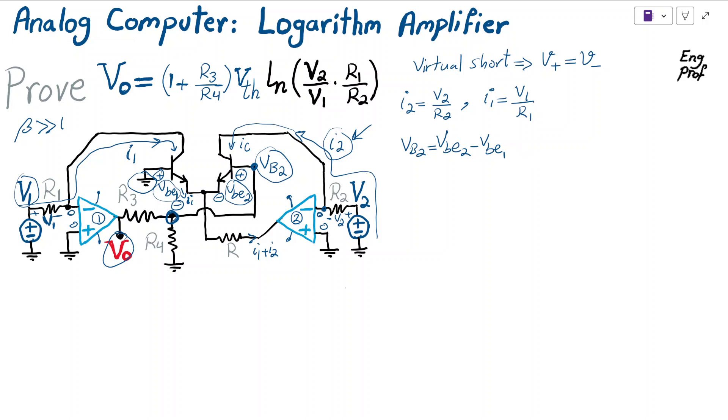For the BJT in the linear region, VBE of the transistor is related to current this way: for transistor number 2, i2 equals the saturation current times e to the VBE2 divided by VT (or V threshold). As a result, VBE2 equals V threshold times ln of i2 over Is. I can write the same thing for VBE1, which is V threshold ln i1 divided by Is.